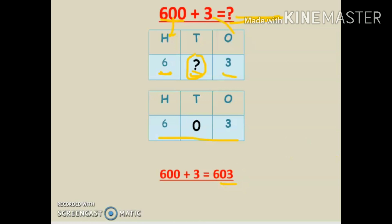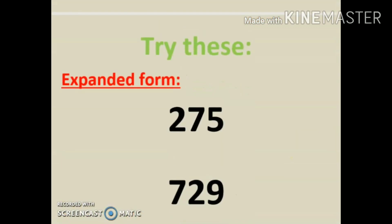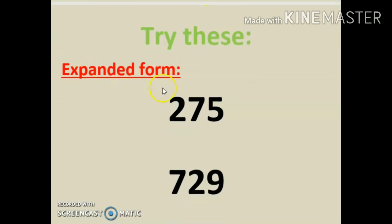I hope you are clear. Now try this: expanded form of two hundred seventy five. Write ones, tens, and hundreds on top. Yes — two hundred plus seventy plus five. Next, expanded form of seven hundred twenty nine: the answer is seven hundred plus twenty plus nine.